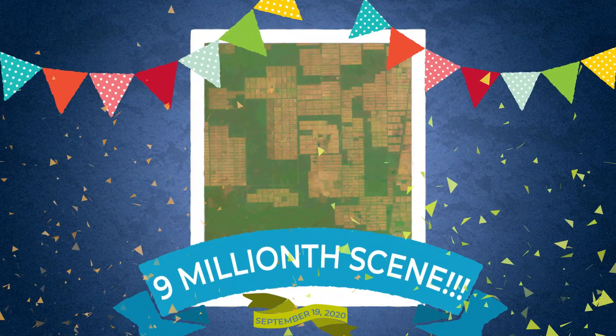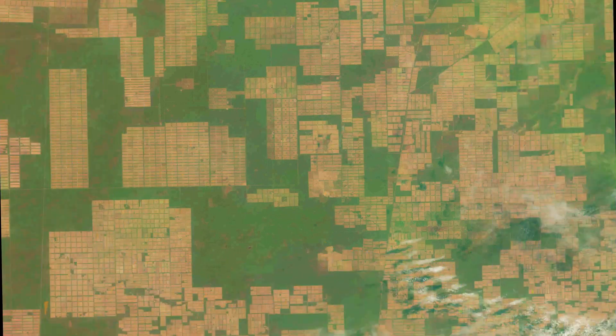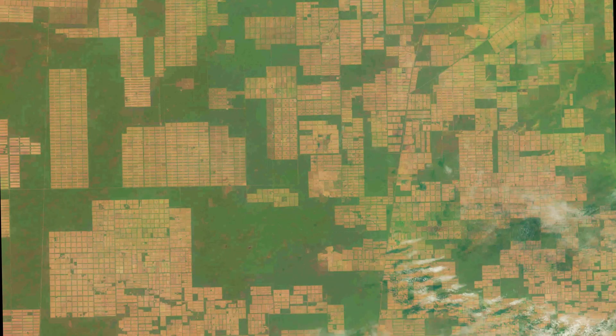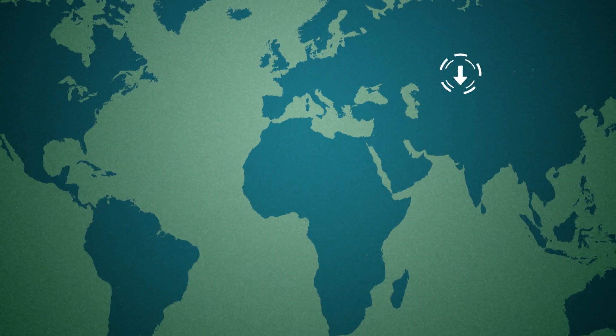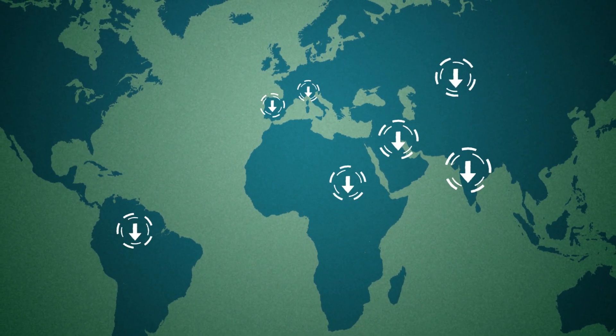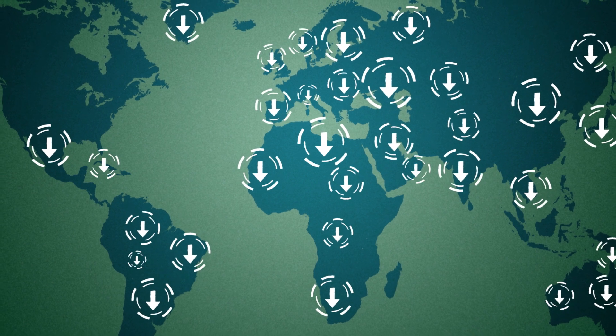Landsat archives its 9 millionth scene. Each scene is a satellite image from space, about 115 miles wide. Researchers and just about anyone can download scenes from the Landsat archive managed by USGS.